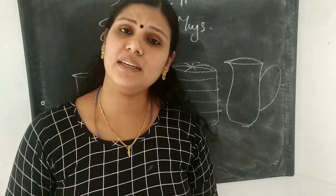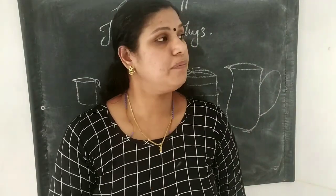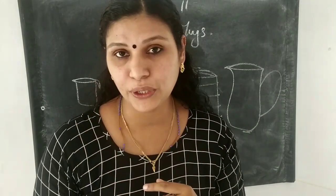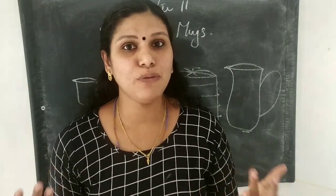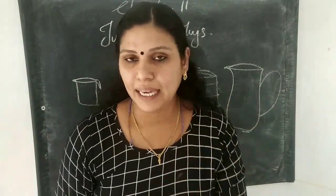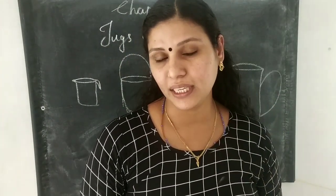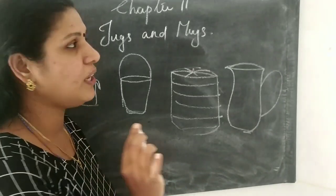Different containers hold different quantities of liquid. To measure this quantity of liquid or water in different containers, we use a unit. In length we use metre and centimetre. In weight we use gram and kilogram. Similarly, for a smaller capacity we use millilitre.